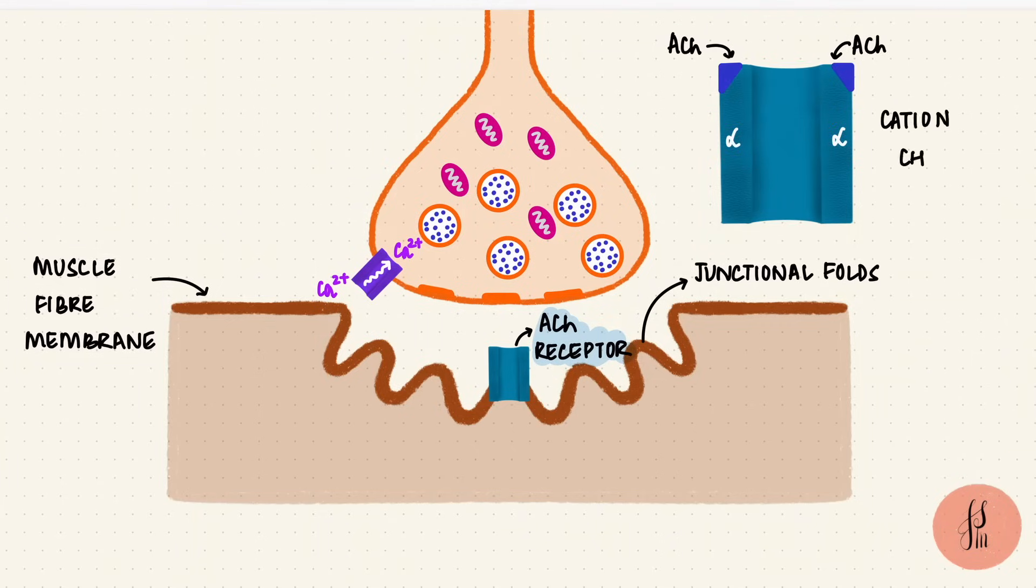This is a cation channel, so it only lets positive ions pass through. The important ones would be sodium and potassium.